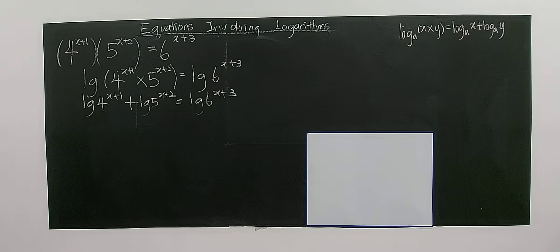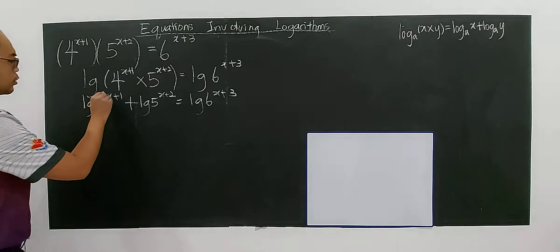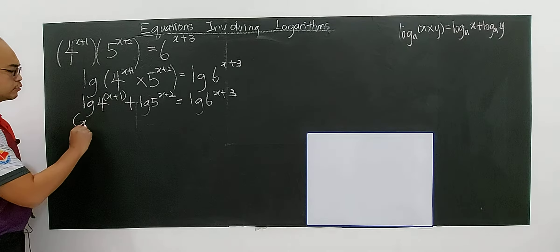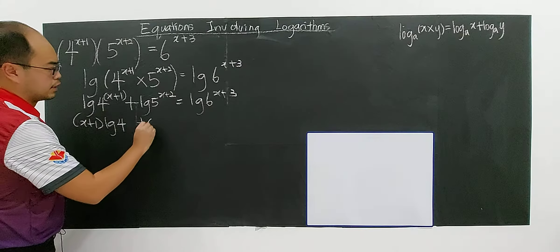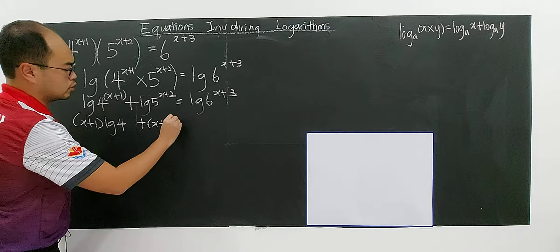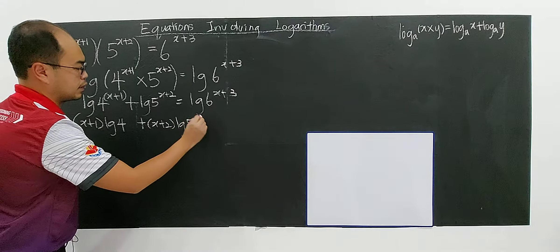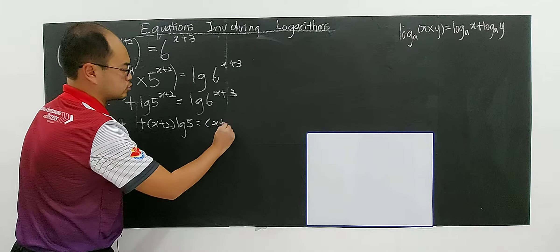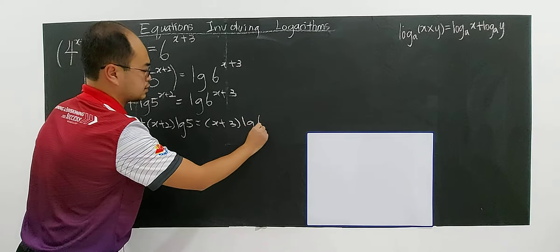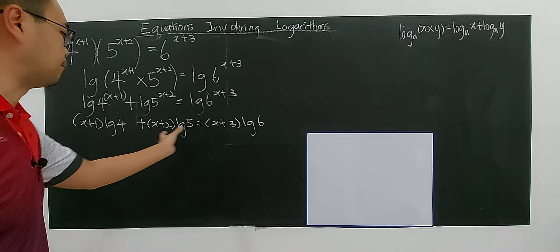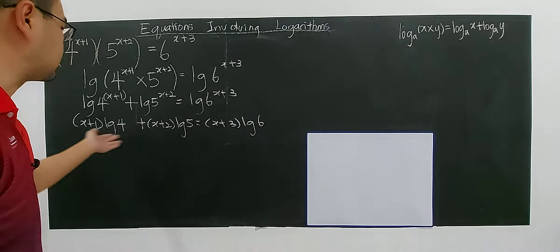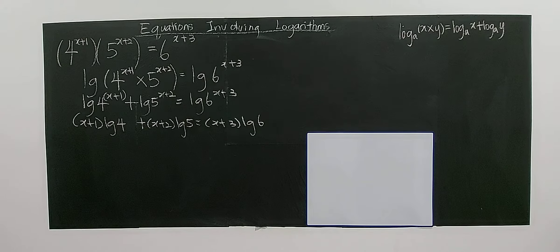Further simplify to help solve the equation. You can bring down the exponents: (x+1)log4 + (x+2)log5 = (x+3)log6. You can see this is actually a linear equation. Assume each log value is a number, so this is a linear equation, not quadratic. It's simple; you just need to be careful while you expand.